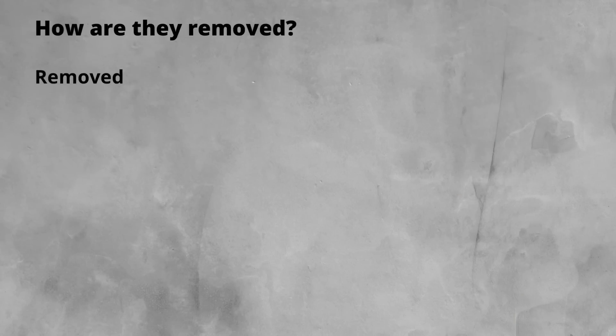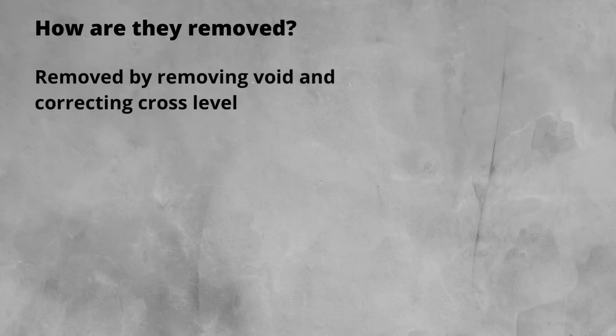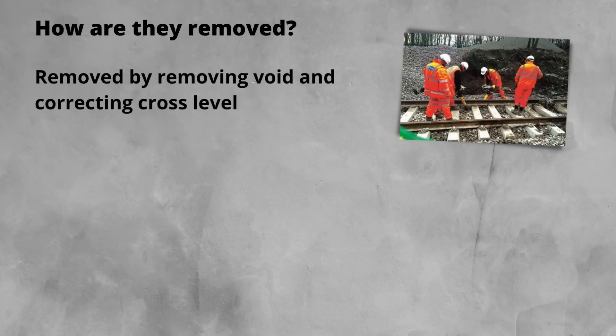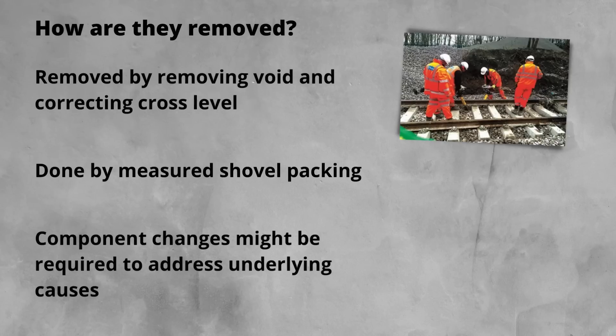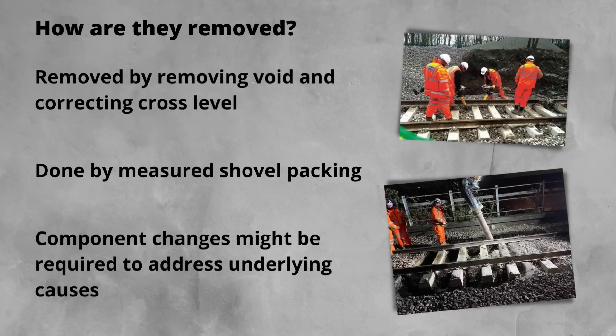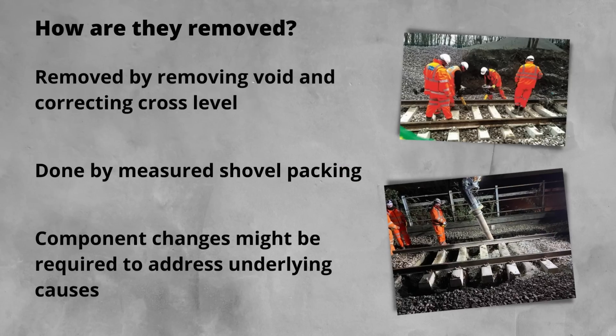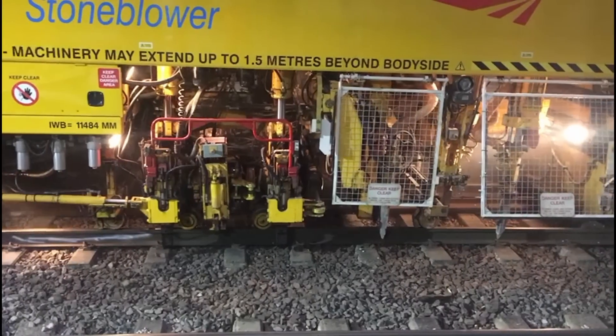So lastly, how are they removed? Twist faults can be repaired by removing the voiding and correcting the cross level. This can be done by measured shovel packing, where chippings are used to fill the voids. However, to fully remove the issues, the underlying cause has to be addressed. This can necessitate more intrusive work such as sleeper changing, ballast renewal or tamping.